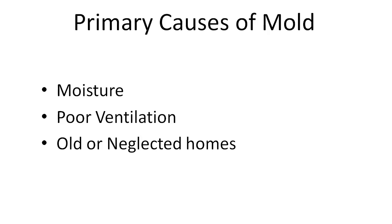Another reason why mold may exist in your home is poor ventilation. You may have poor ventilation in your attic or basement, which can lead to moisture in the air. Installing fans and keeping windows open to allow positive airflow can help keep spores from growing.